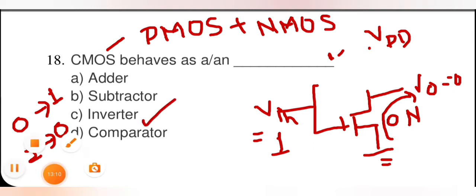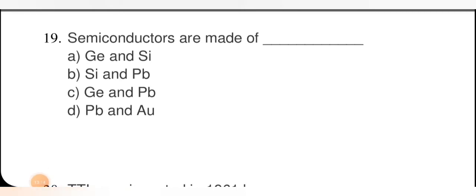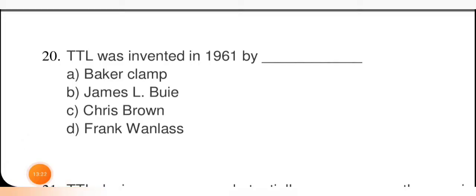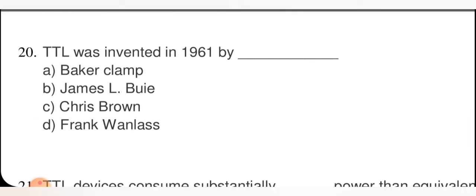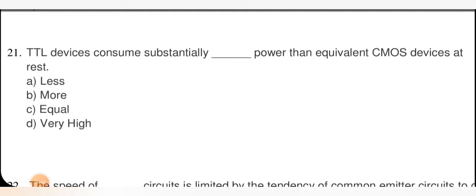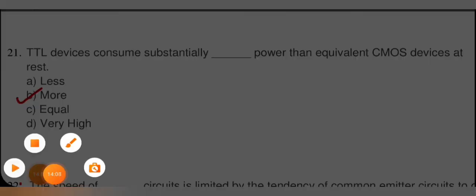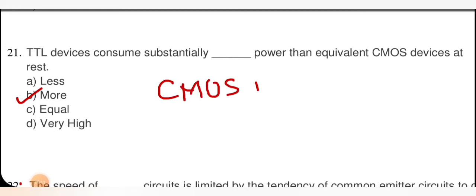Semiconductors are made of germanium and silicon — that is the right option. TTL was invented in 1961 by James L. Buie — right answer is option B. TTL devices consume substantially more power than equivalent CMOS devices at rest, which is why CMOS is preferred — that is the right option.